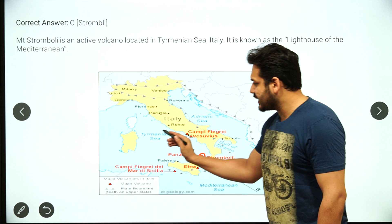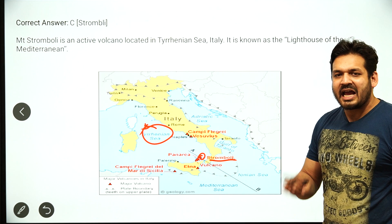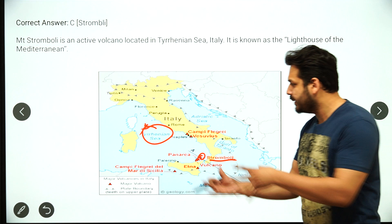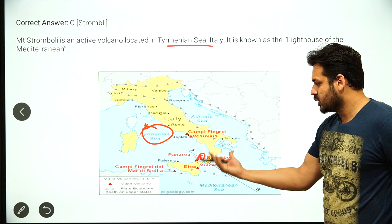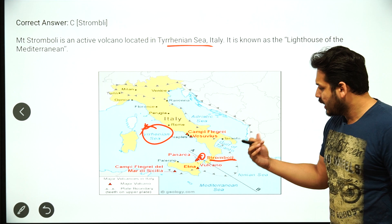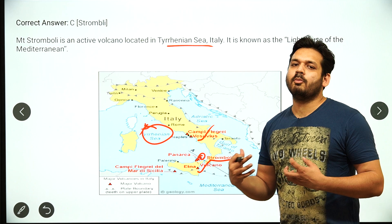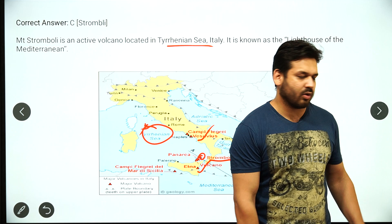More precisely, Mount Stromboli is located in the Tyrrhenian Sea, which is part of the Mediterranean Sea, in Italy. Mount Etna and Mount Vesuvius are also important volcanoes in Italy. Among these three, Mount Stromboli is specifically known as the lighthouse of the Mediterranean.